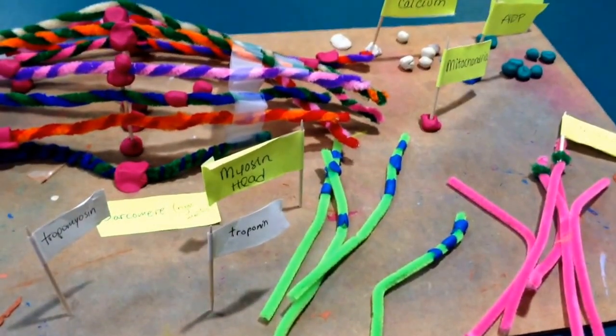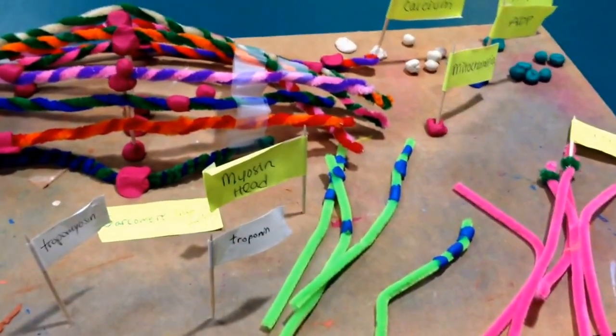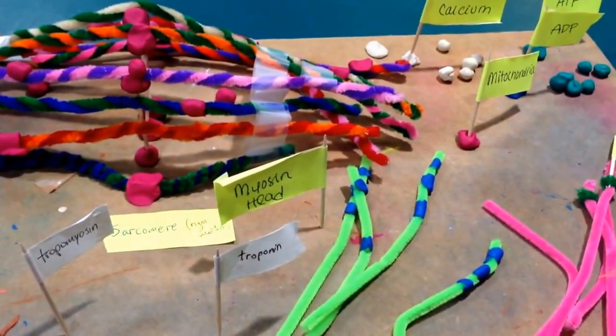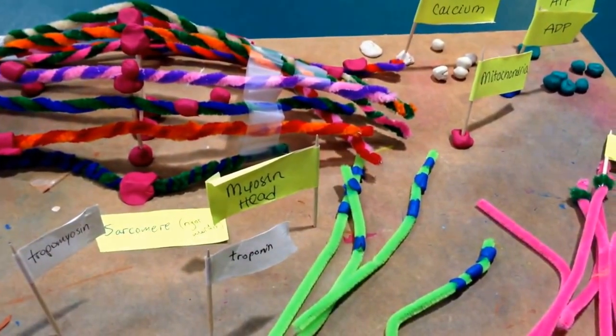In this model, we will be demonstrating the sliding filament theory. Thick and thin filaments within the sarcomere slide past one another, shortening the entire length of the sarcomere.